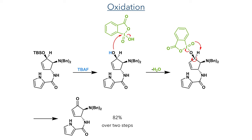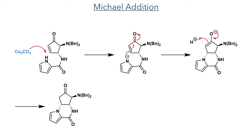This ketone was required for a Michael addition. Cesium carbonate deprotonates the pyrrole group and this then undergoes an intramolecular Michael addition into the beta position of the enone, forming the desired six-membered ring.